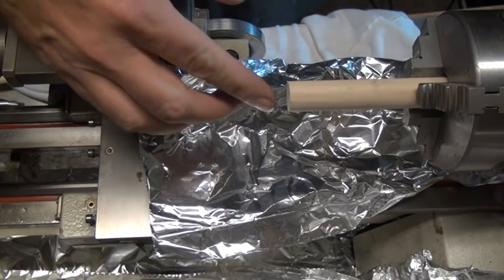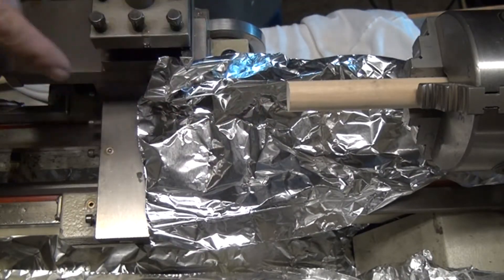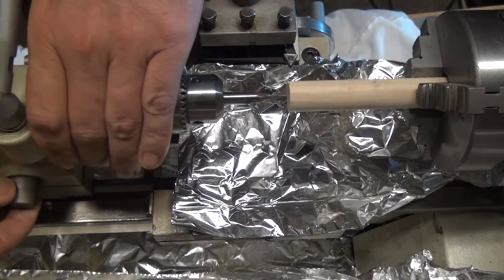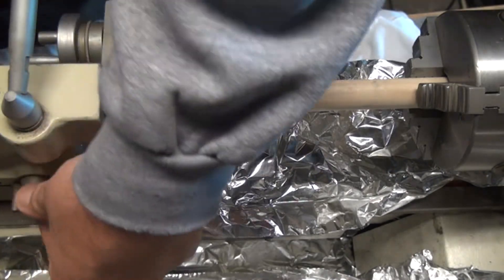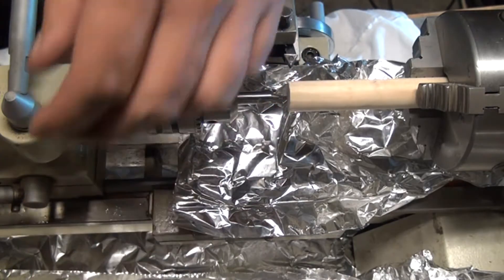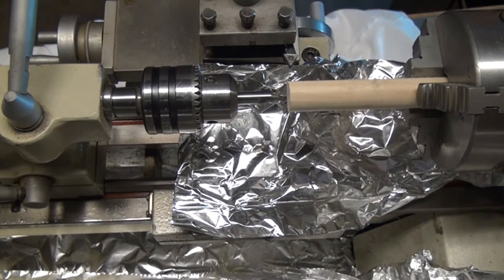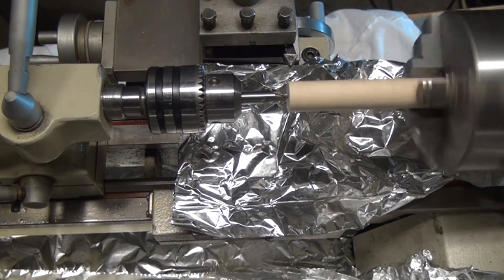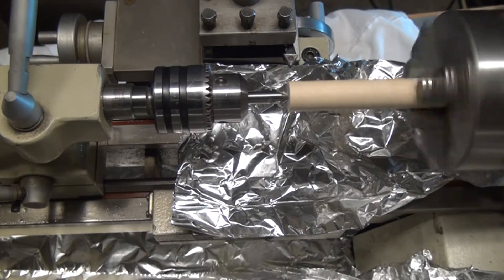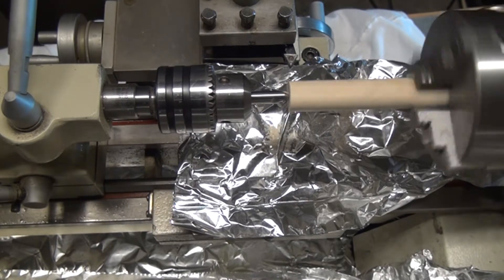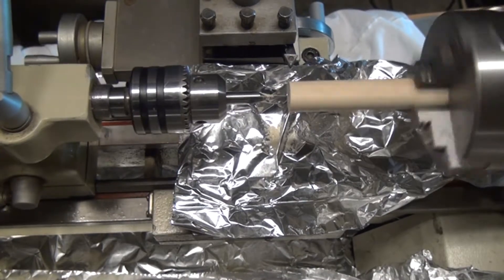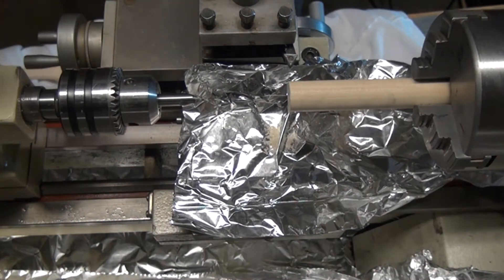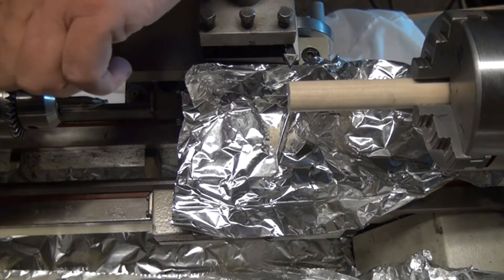So now I'm going to center drill the end, get it prepared - this is the end where the brass striker is going to go. Excuse me for a moment. Turn the speed down a bit. There we go. So I'm going to go ahead and change this center drill out for a twist drill.